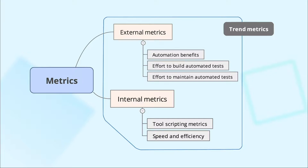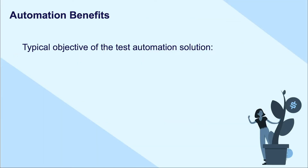On top of that, there are trend metrics to get an overview of the historical performances of these metrics. Now, we'll have a look at the first external metric called the automation benefit.